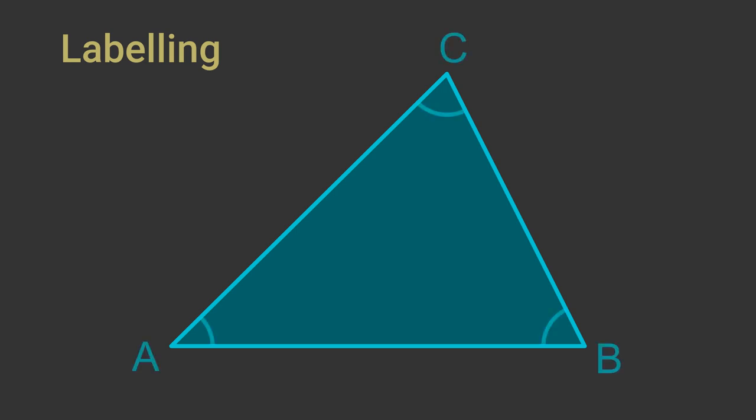We normally label the angles of the triangle as capital A, B and C. We label the sides as lowercase a, b and c. It is important that each side is opposite the angle with the same name. Side a is opposite angle A, b is opposite B, and c is opposite C.